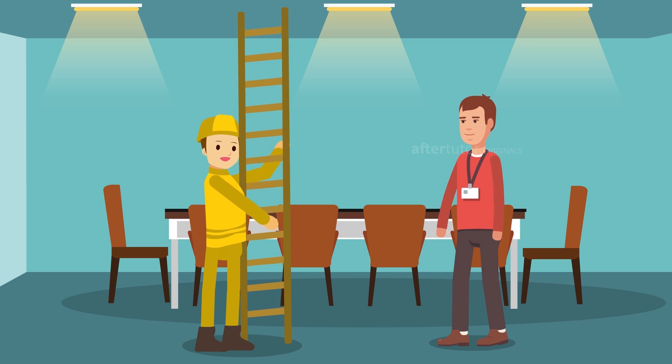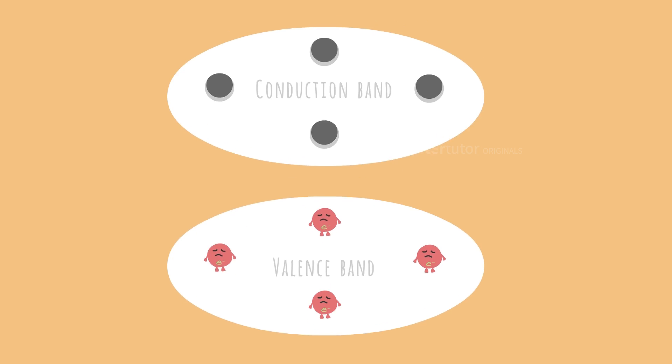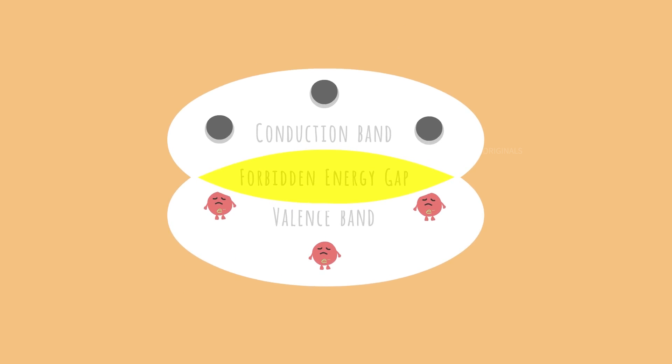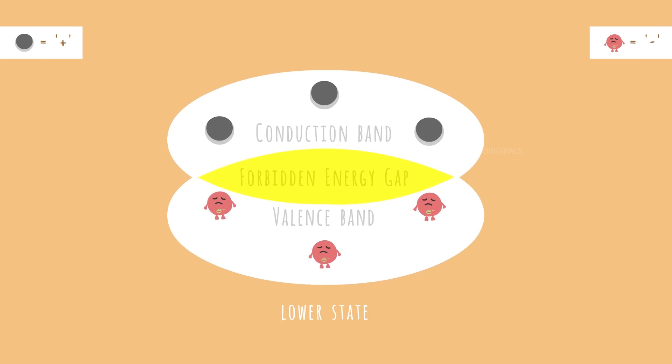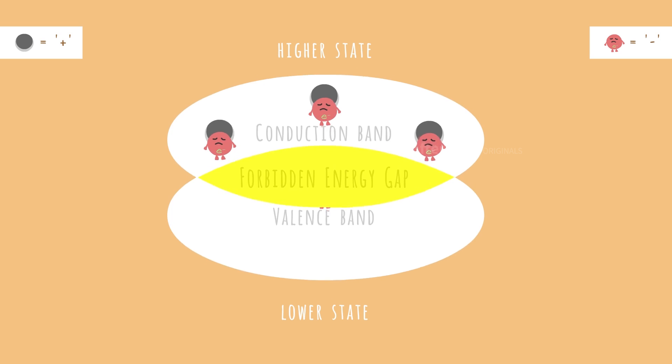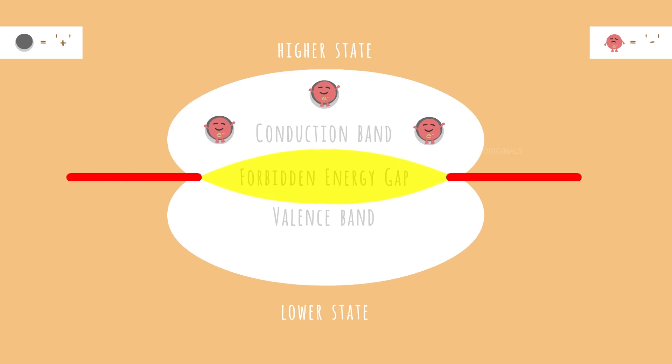Meanwhile, Mark asked the assistant about the process of recombination. Usually, there are three levels of energy band gaps. When free electrons flow from the lower state, the valence band, to the holes of the higher state, the conduction band, light is produced in the forbidden energy gap.